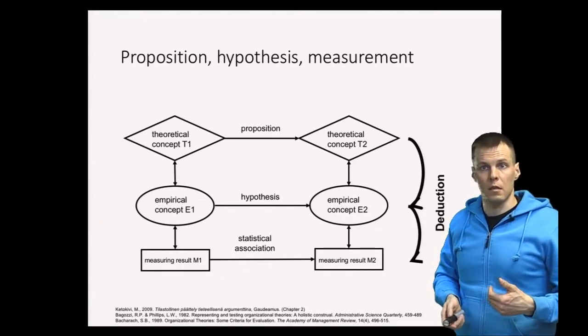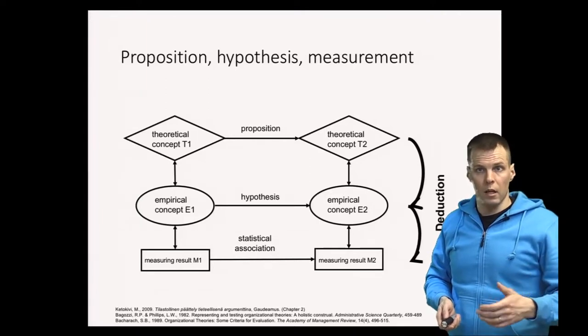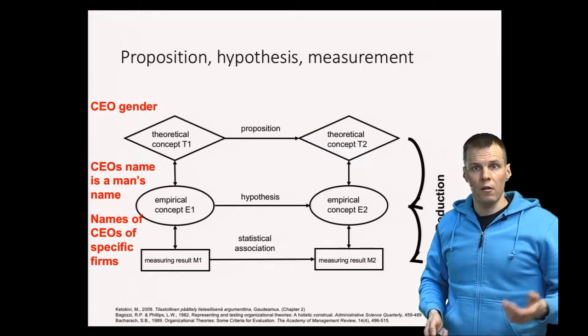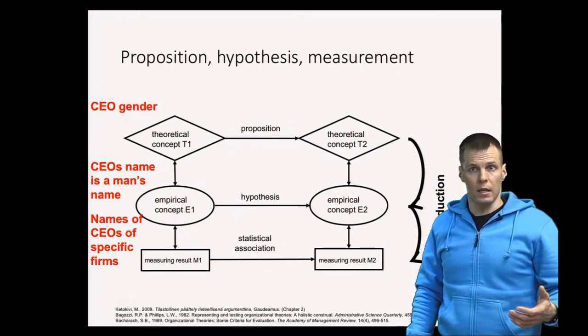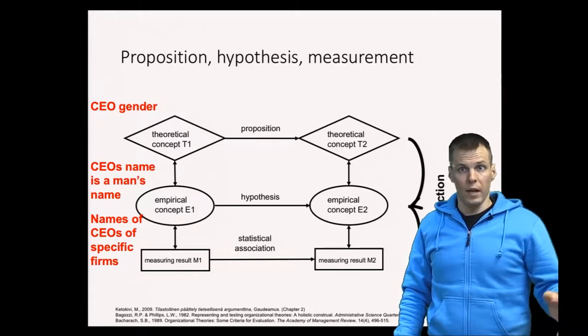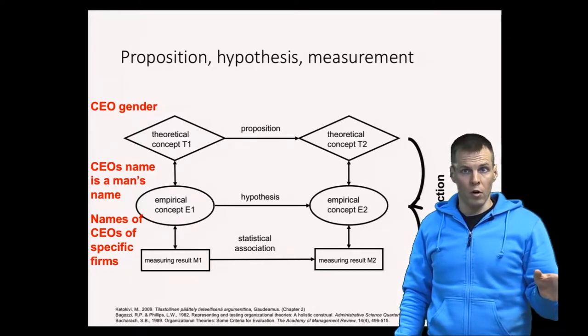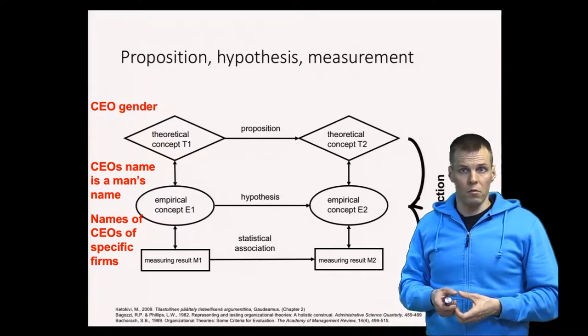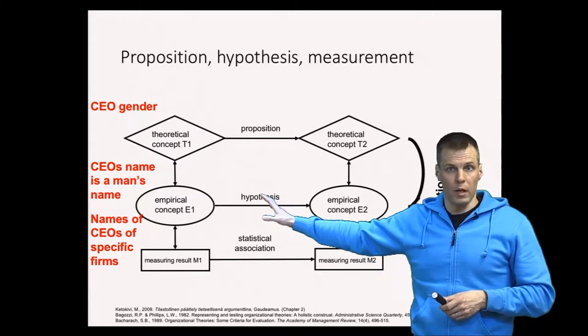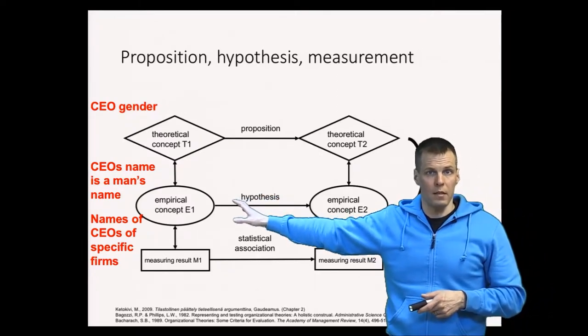The first concept was CEO gender, and we need to have an empirical concept that we can actually collect data for. For example, if the gender of the CEO is the theoretical concept, we could have the result of a medical examination as an empirical concept. But that's not a practical solution. In practice, we can define our empirical concept as whether the CEO's first name is a man's name or a woman's name.